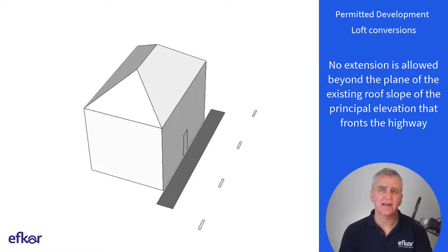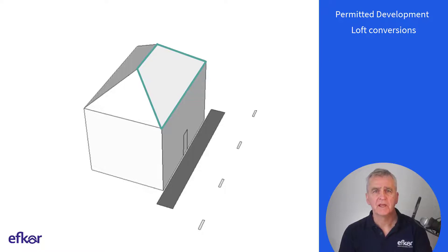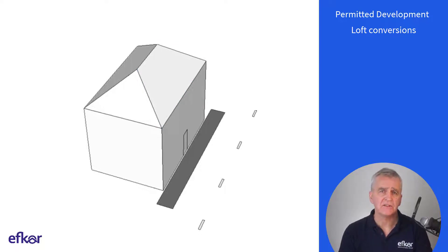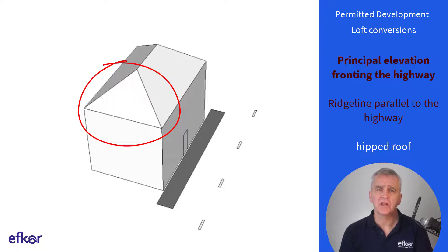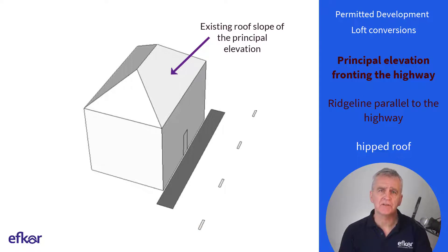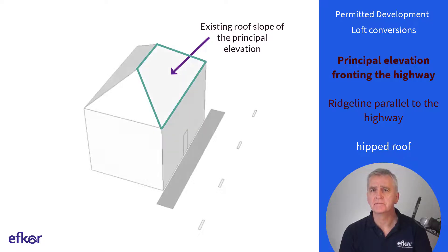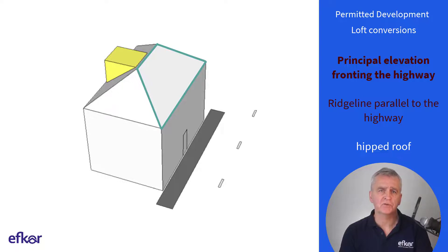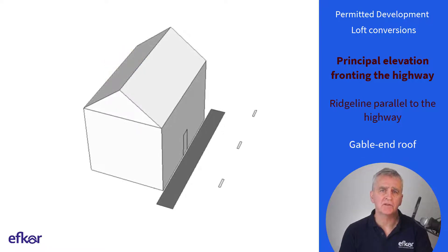No extension is allowed beyond the plane of the existing roof slope of the principal elevation that fronts the highway. This condition allows several interesting configurations for dormer windows. Starting with a conventional configuration for a detached house — with the front door indicating the principal elevation and the hipped roof having a ridge line parallel to the highway — this is the existing roof slope of the principal elevation, and no extensions are allowed beyond this plane. A dormer window can be added to the rear elevation under PD rules, and the roof hips can be extended to gable ends to allow a larger roof extension.